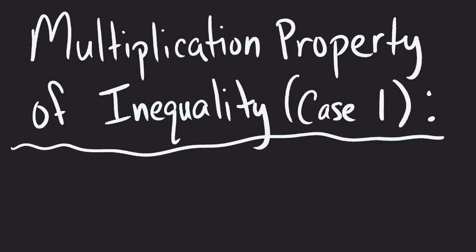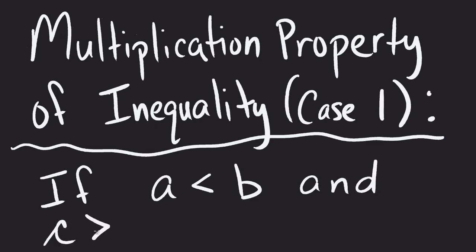The multiplication property of inequality has two cases: one where our c value is greater than zero, and one where our c value is less than zero. We're going to begin by looking at case one, which basically says that if we have a < b and we have c > 0, so we have a positive value.